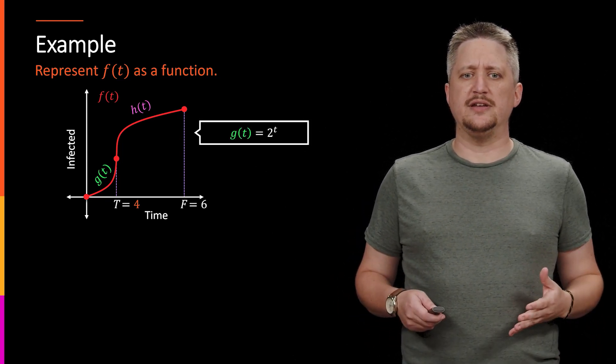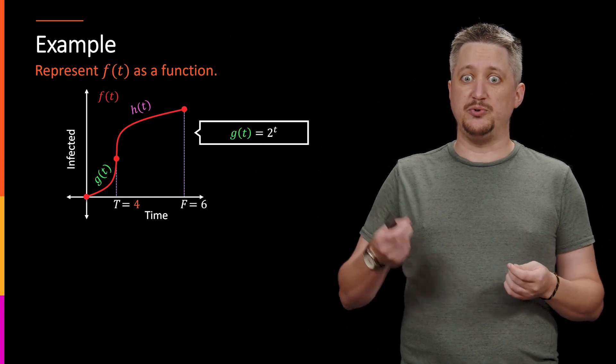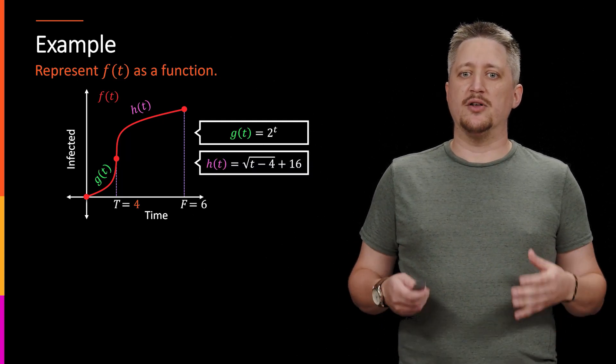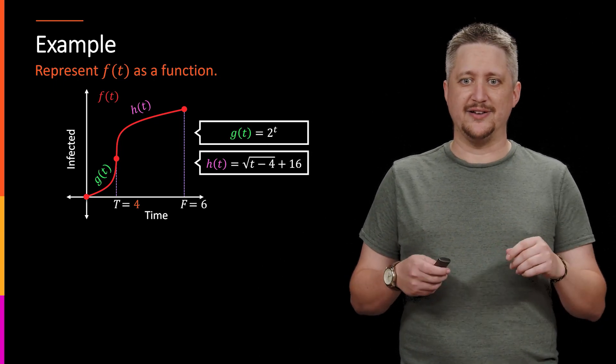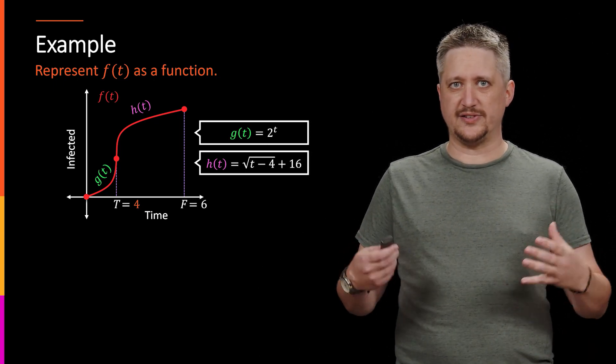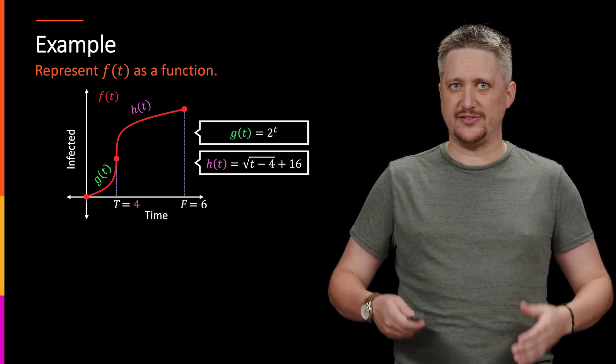And let's say that we can model G of T, that's some 2 to the T, and we can model that H of T, this is another function that gets us that is square root of T minus 4 plus 16. So we have the functions that these things represent.